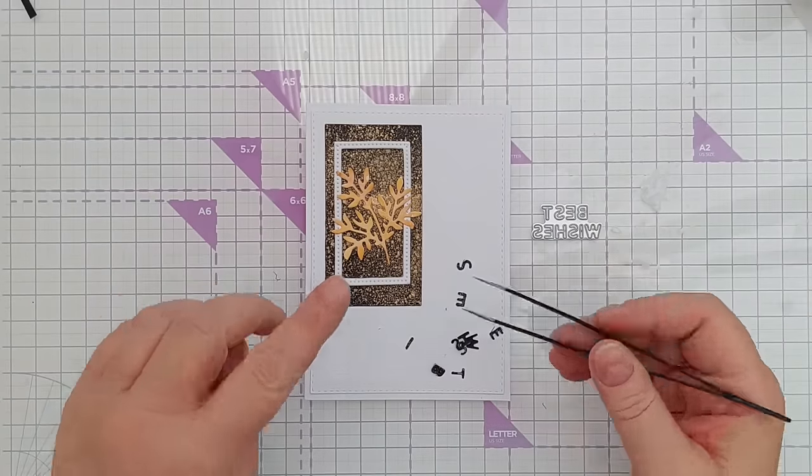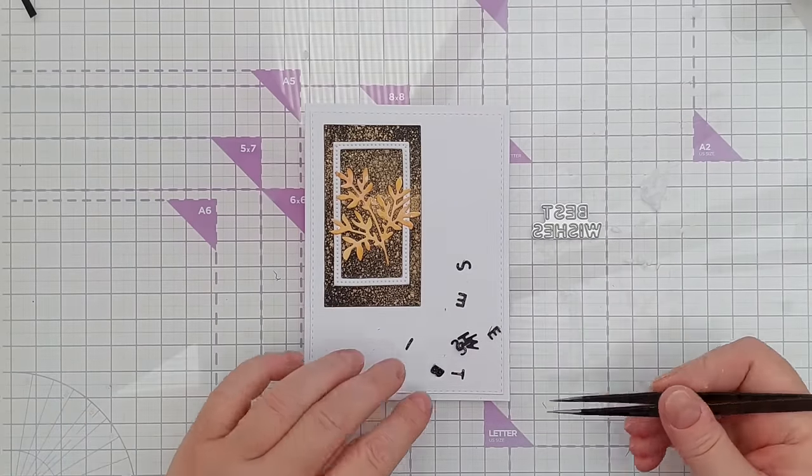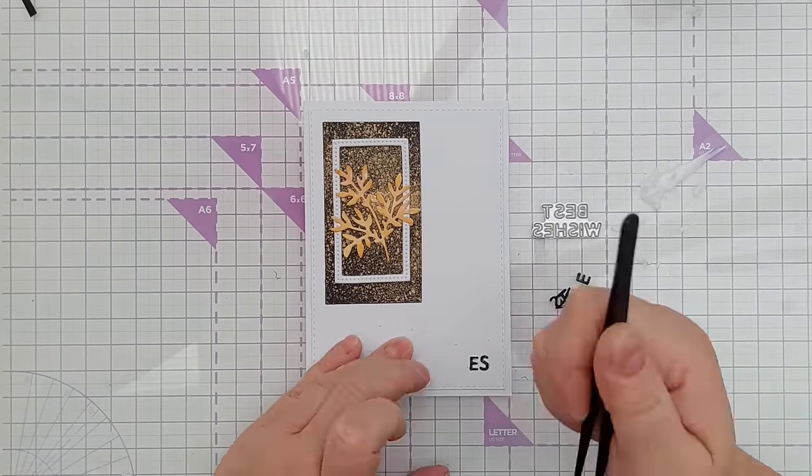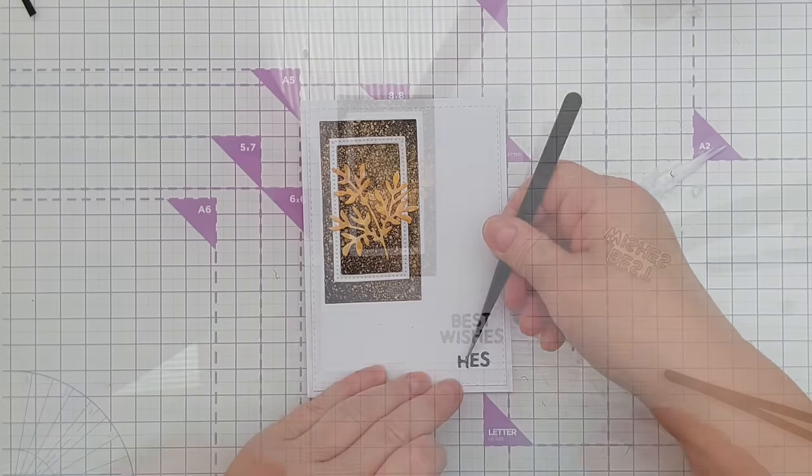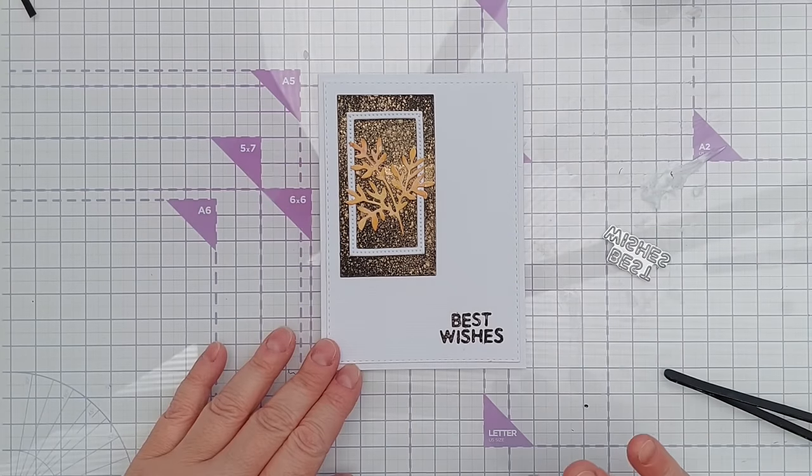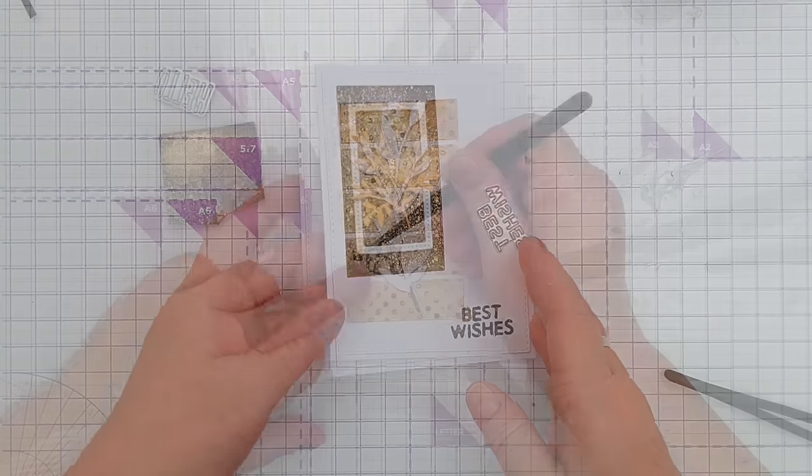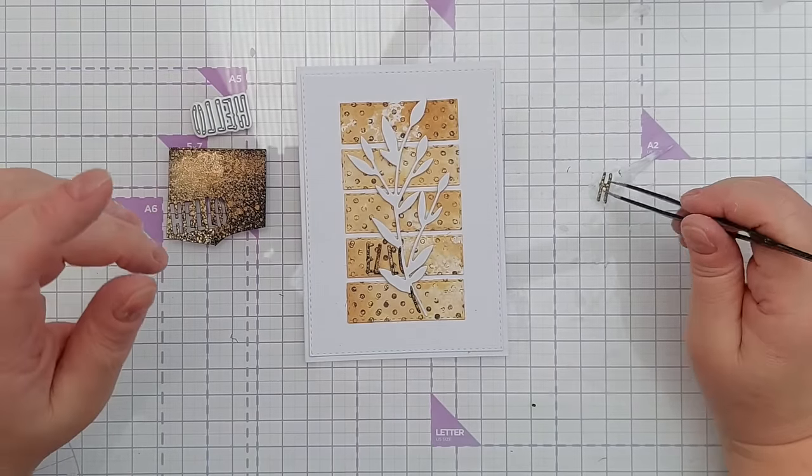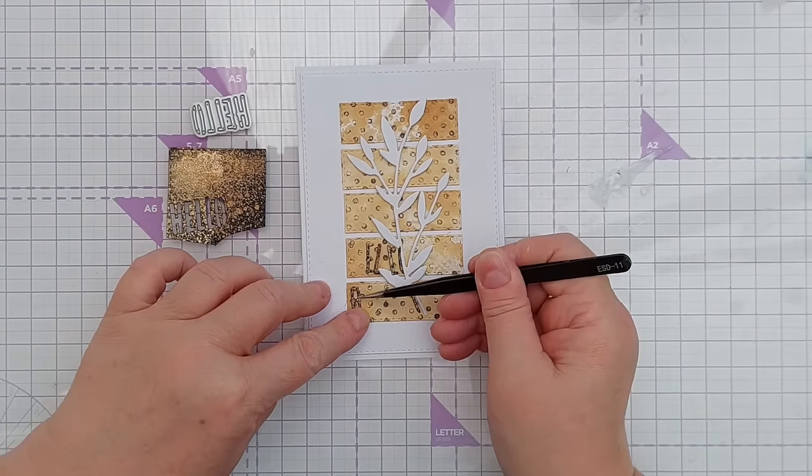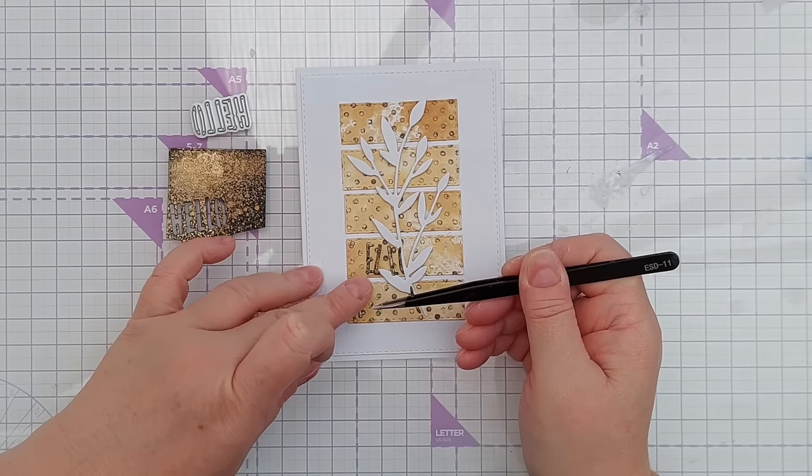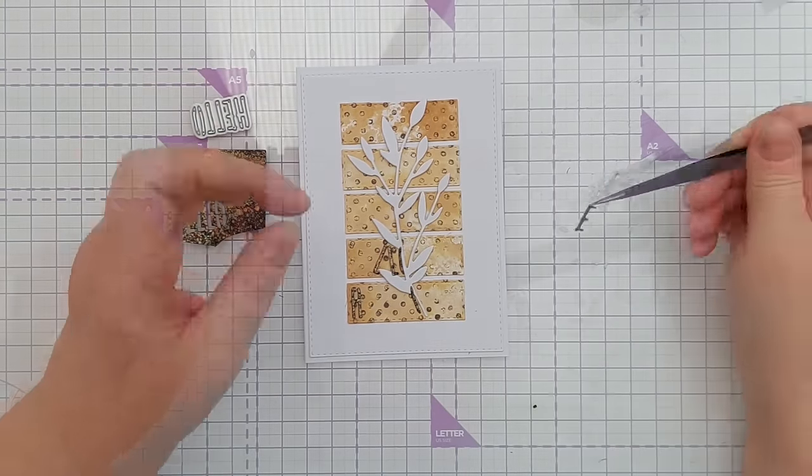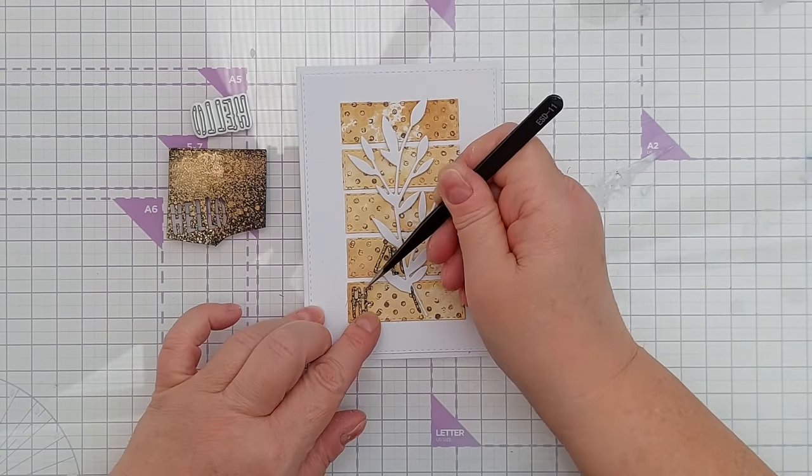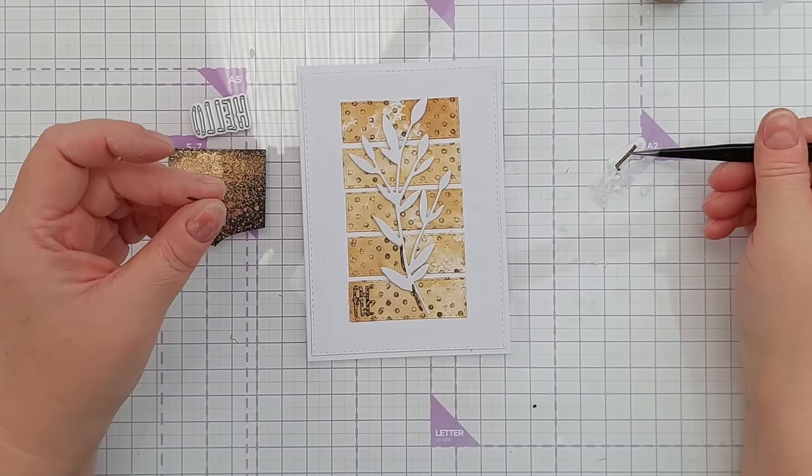For this card, I've die cut the 'best wishes' out of this card again. I think that is done for now. Similarly, I've cut a 'hello' using this die here, and I'm going to add the word to this bottom panel. There's a perfect size gap right there. It doesn't stand out too much, but it's still there. I think that works.